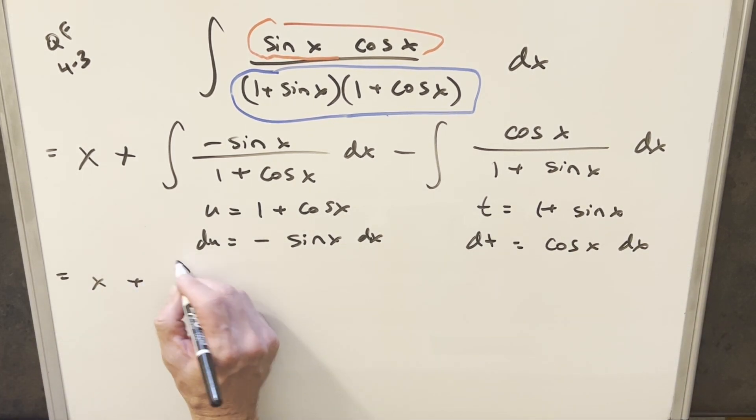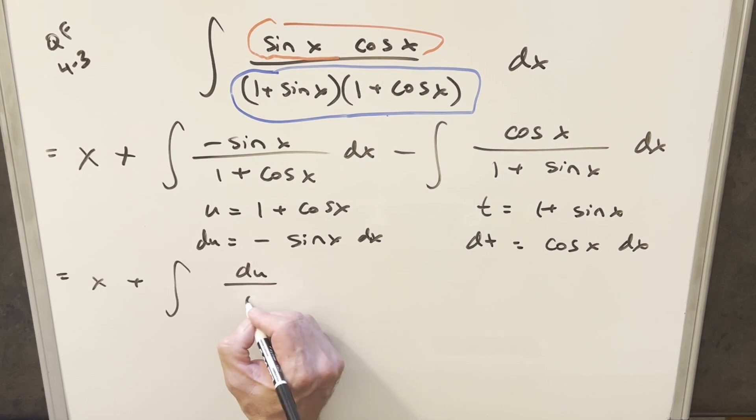So doing these simultaneously, what's going to happen is we're going to have x plus the integral here of du over u, then minus... This one's just going to become dt over t.